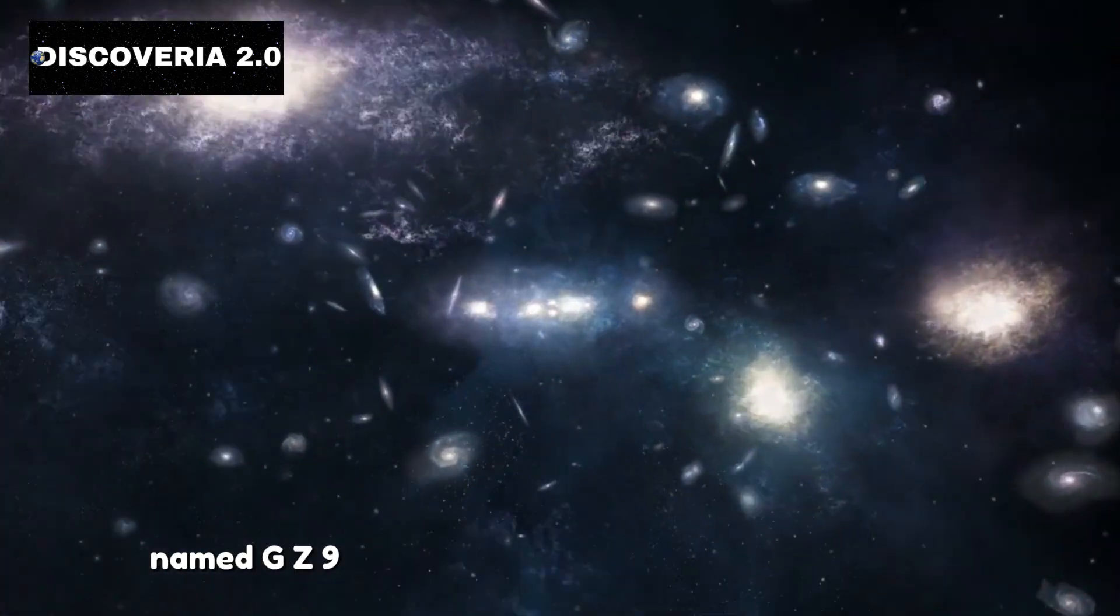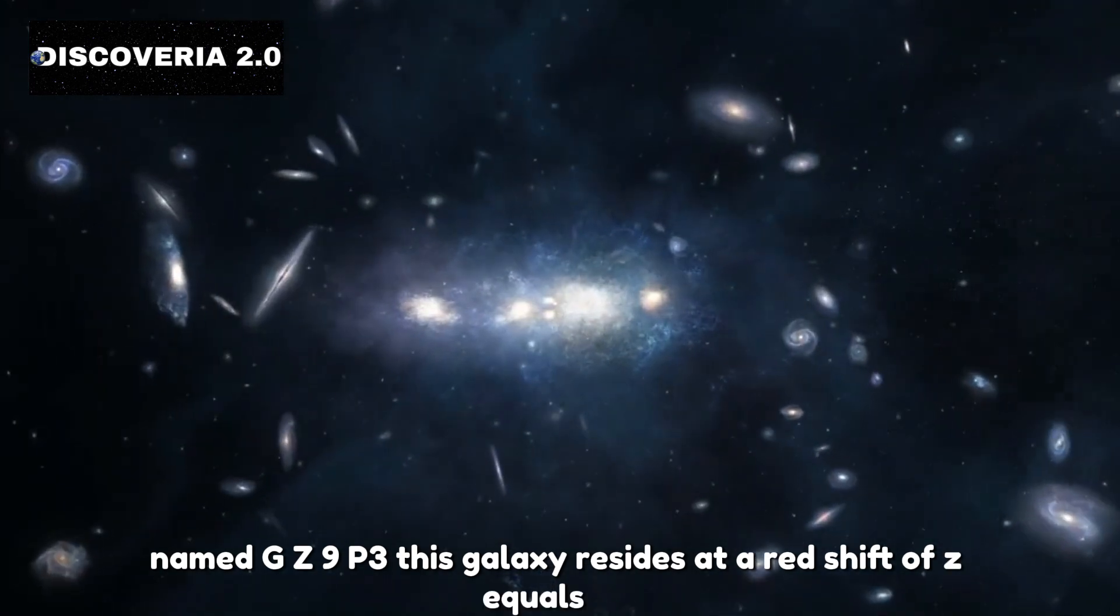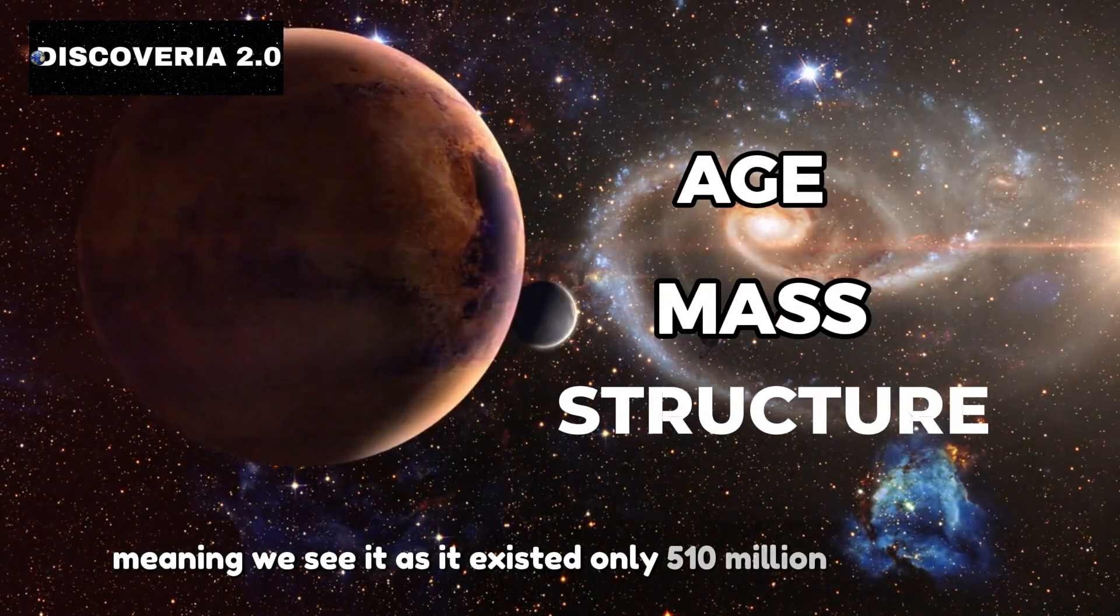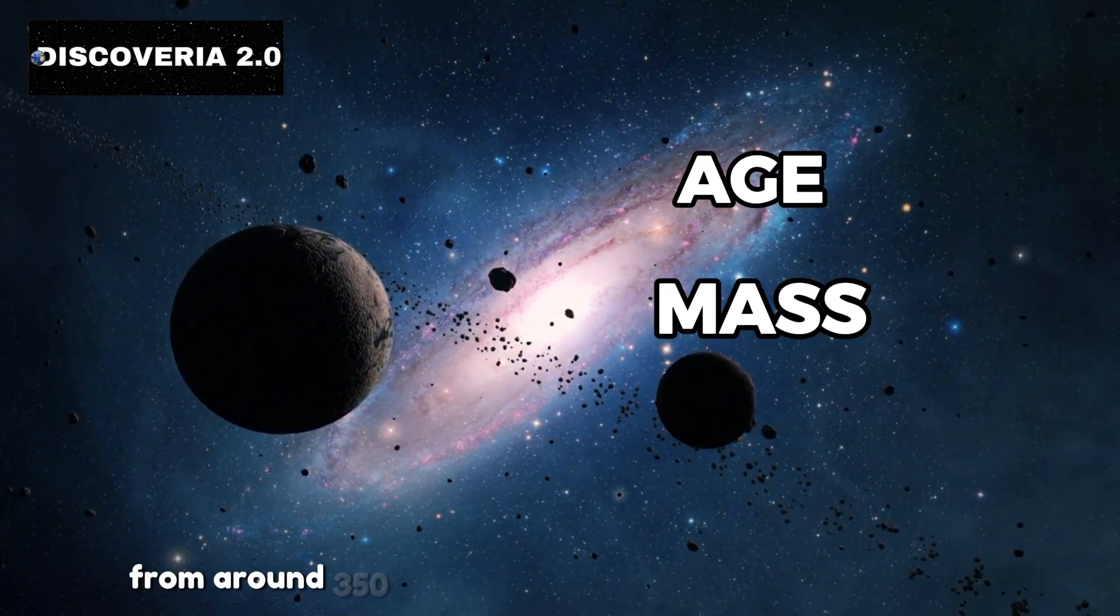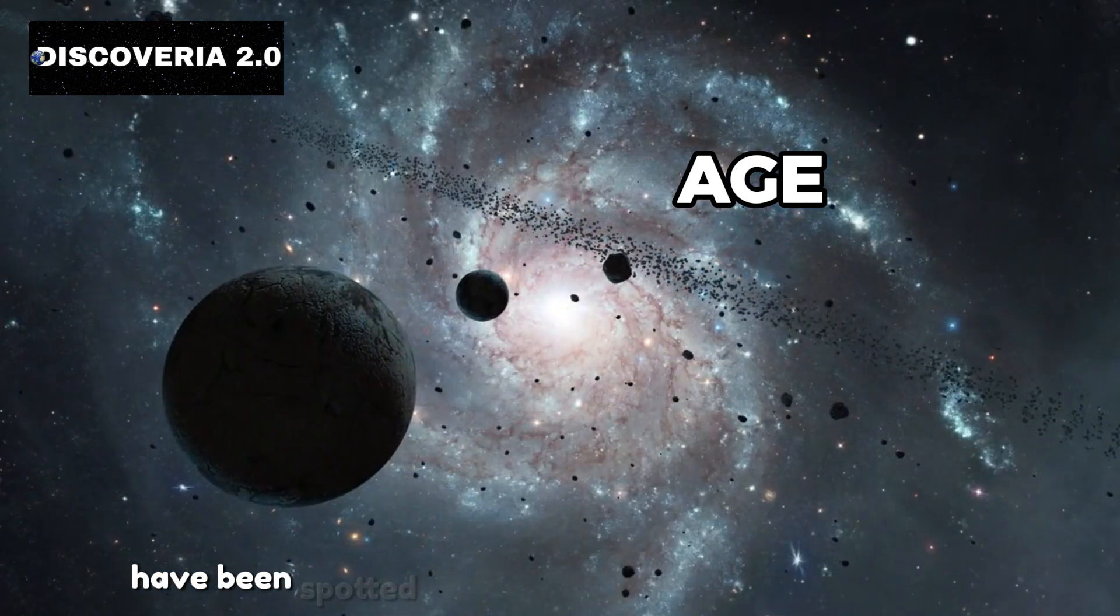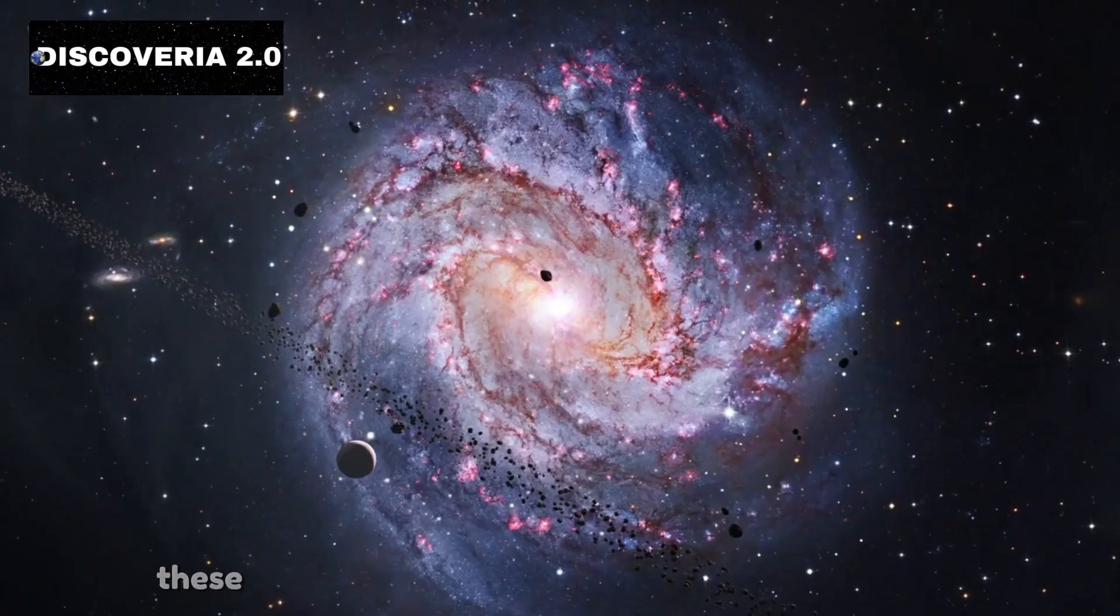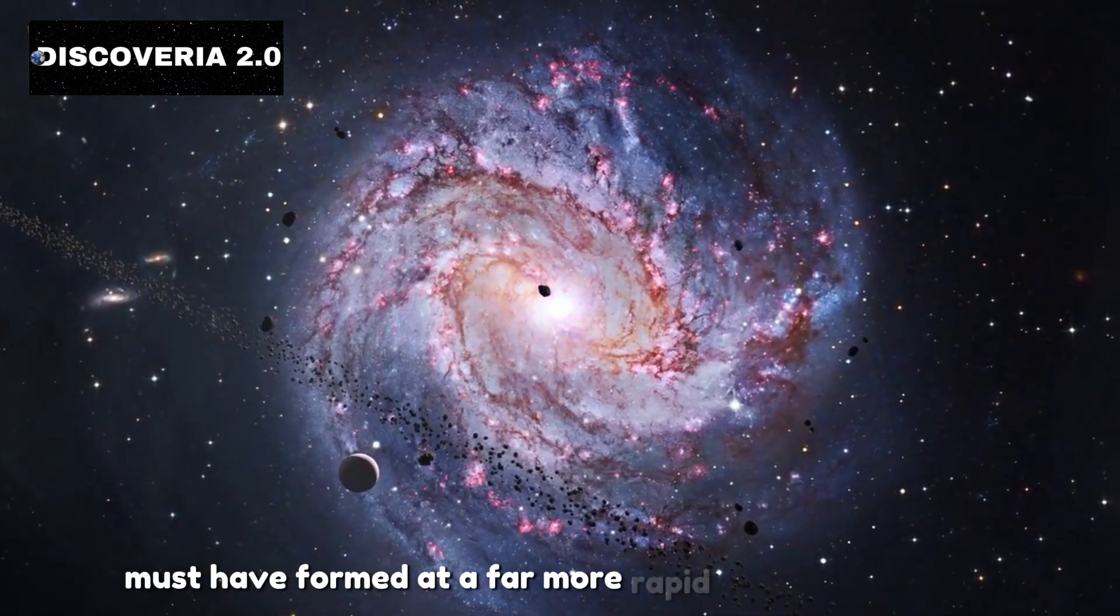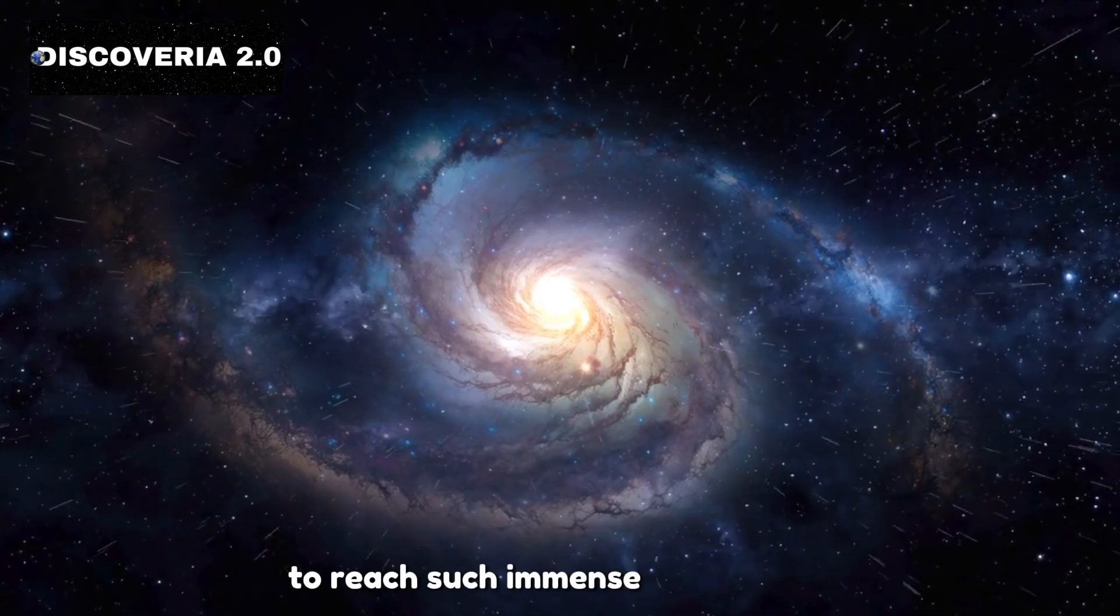Named GZ9P3, this galaxy resides at a redshift of Z equals 9.3, meaning we see it as it existed only 510 million years post-Big Bang. Although other galaxies from around 350 to 500 million years after the Big Bang have been spotted, none compare to the size of this one. These observations suggest that stars in this galaxy must have formed at a far more rapid and efficient pace than previously understood to reach such immense proportions.